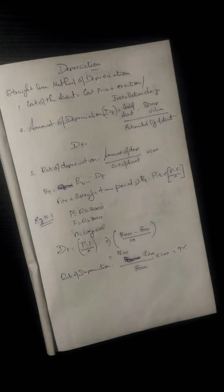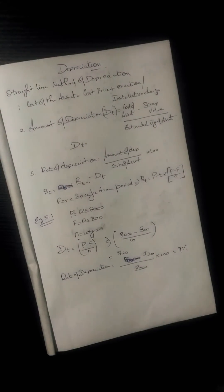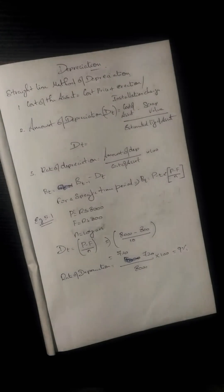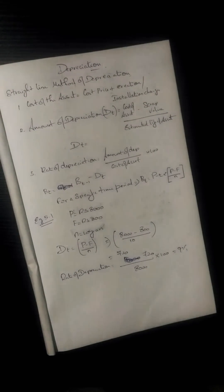There are five methods of depreciation. First is the straight line method, also called the fixed installment method. Second is the declining balance method, or written-down value method. Third is the sum of digits method. Fourth is the sinking fund method. Fifth is the service output method, also called the production unit method.